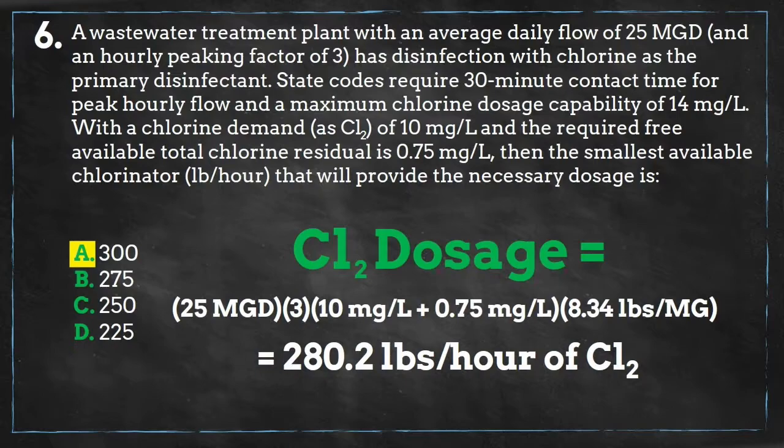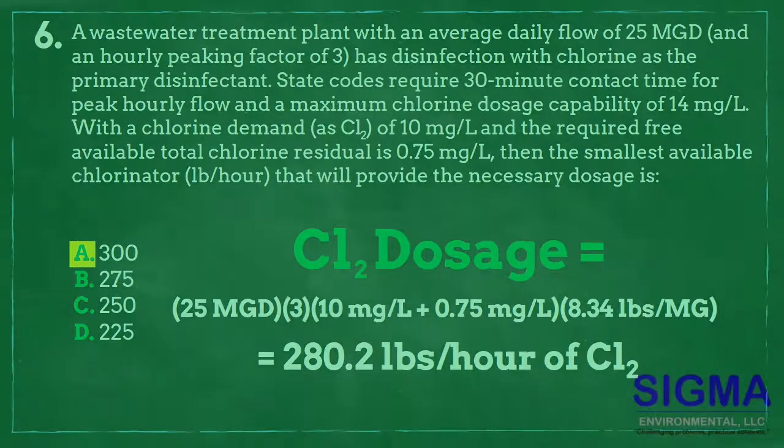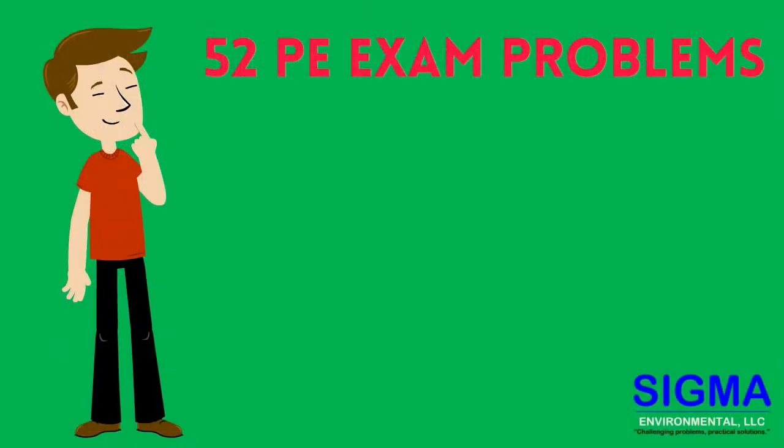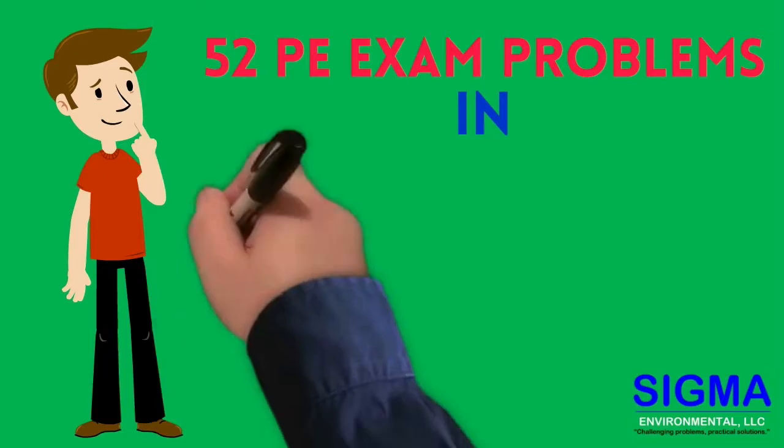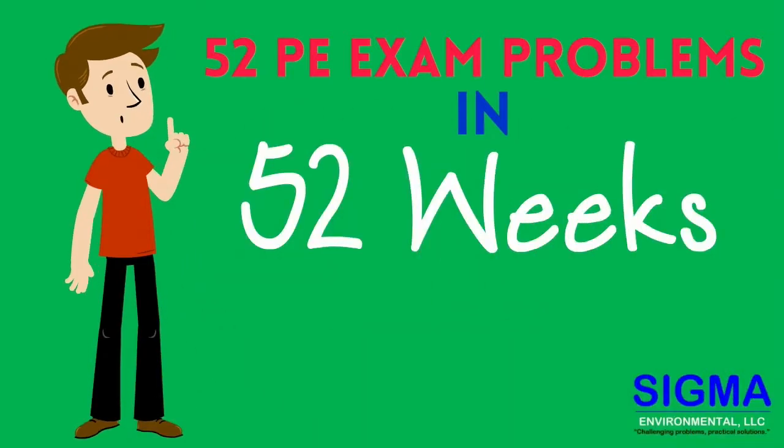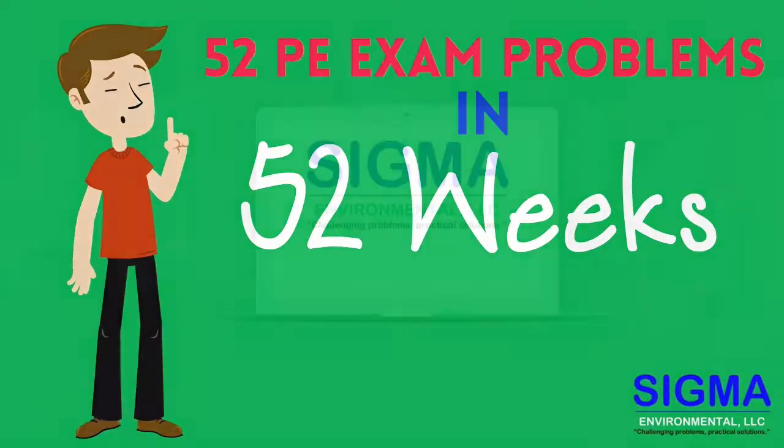Looking at our choices, A (300 lb/hr) is the only one that will accommodate this. Join us for episode seven of 52 PE exam problems in 52 weeks.